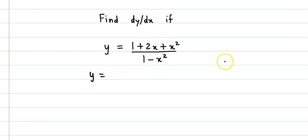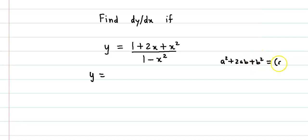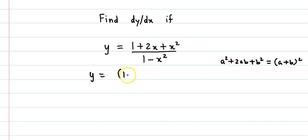The numerator is of the form a square plus 2ab plus b square, and this is the expansion for a plus b the whole square. Here, a is equal to 1 and b is equal to x. So the numerator is 1 plus x the whole square.